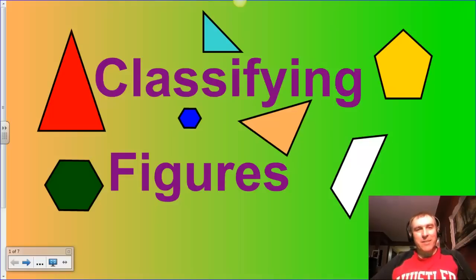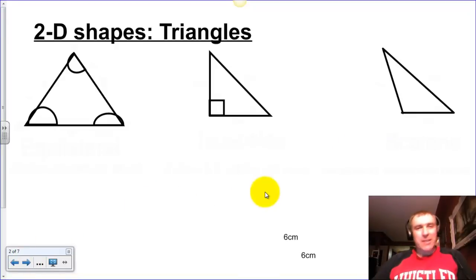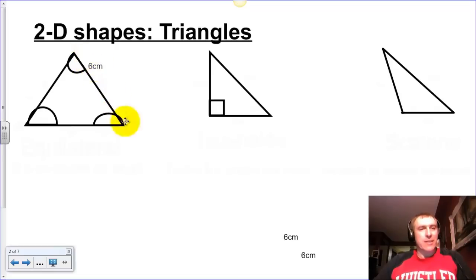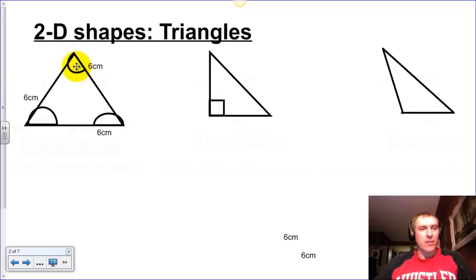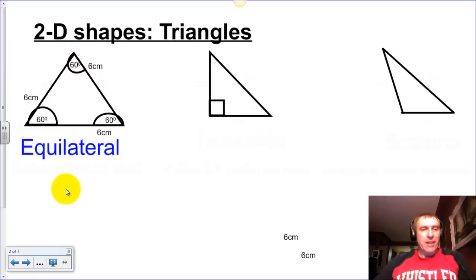Hey grade sixes, we're going to be talking about classifying 2D figures that you find in everyday life. We're going to start off with triangles, the three-sided shapes. We've got some triangles here with different side lengths. This side is six centimeters, this side is six centimeters, and this side is six centimeters as well. So we've got equal sides all around. If we look at the angles with a protractor, every angle is also equal, and because everything is equal, this triangle is known as an equilateral triangle.